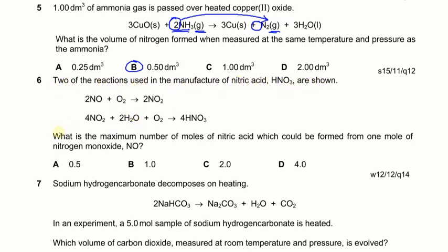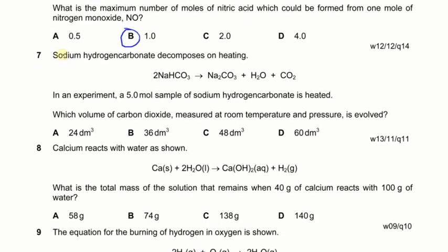Next: two reactions used in the manufacture of nitric acid are shown. What is the maximum number of moles of nitric acid which could be formed from 1 mole of nitrogen monoxide? From the first equation, 2 moles of NO gives 2 moles of NO₂, so 1 mole of NO gives 1 mole of NO₂. In the second equation, 4 moles of NO₂ produces 4 moles of HNO₃, so 1 mole of NO₂ gives 1 mole of HNO₃. The answer is B.